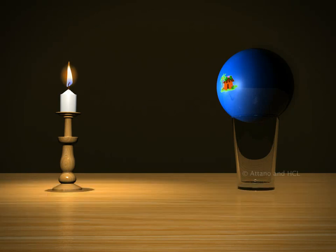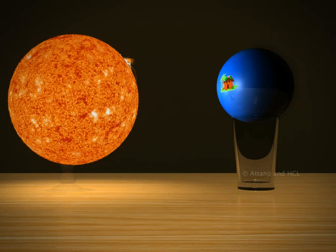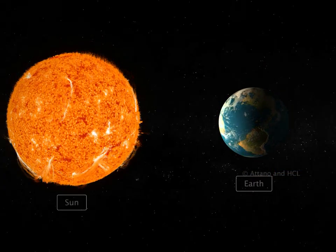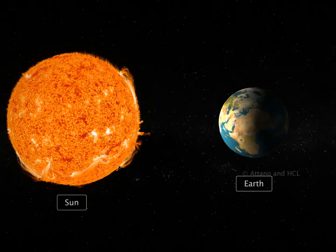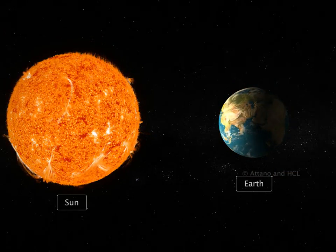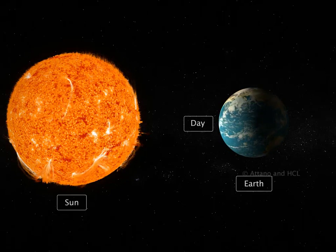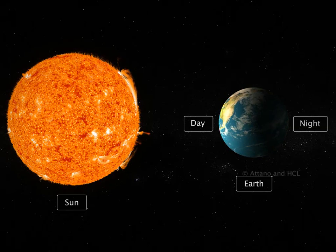Now imagine, the candle is the sun and the ball is the earth. At any time, only one half of the earth gets sunlight and it is daytime there. The other half does not get sunlight and it is night there.